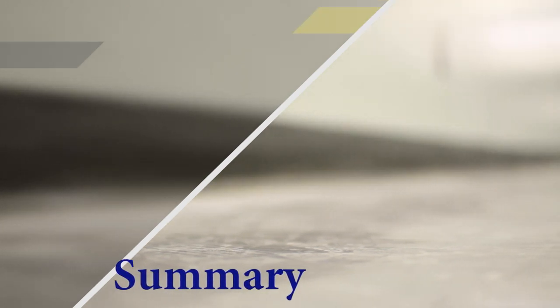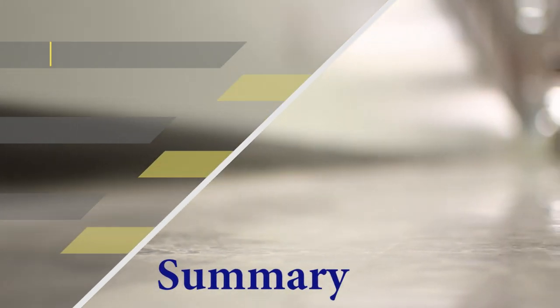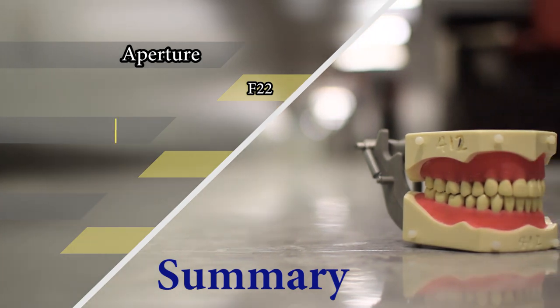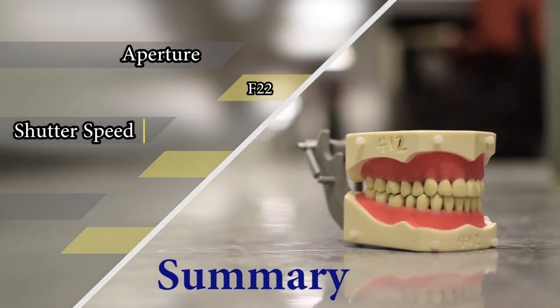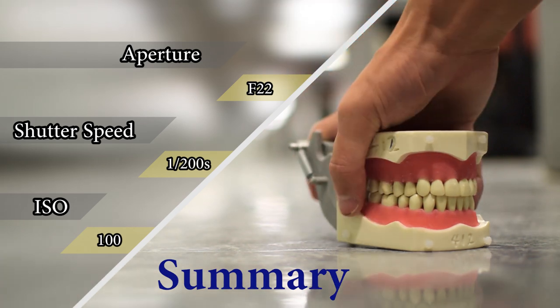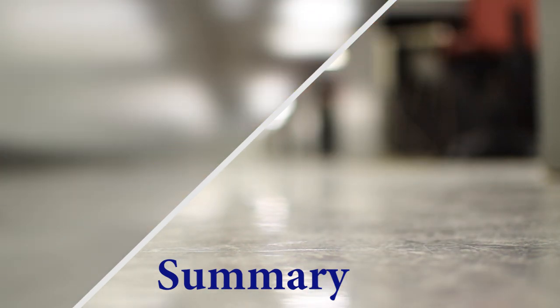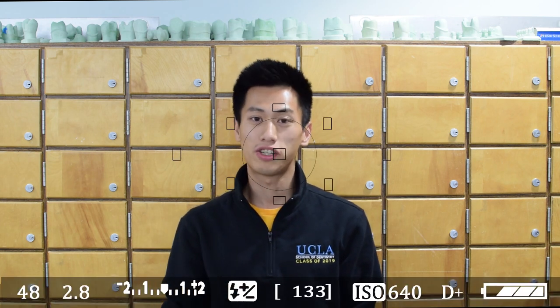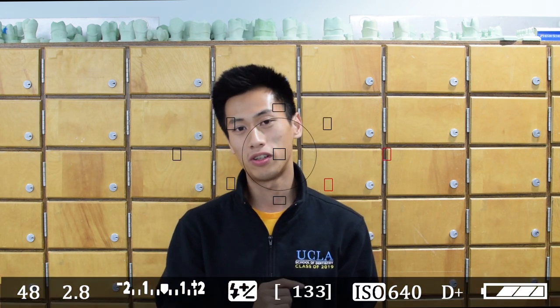Now in summary, these are the three settings that you can start off with: aperture at f/22, shutter speed at 1/200th of a second, and ISO at 100. Now these settings might change depending on the situation, so what I encourage you to do is to just pick up your camera and start shooting, because that's the fastest way you'll learn.